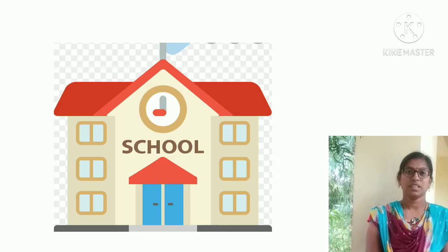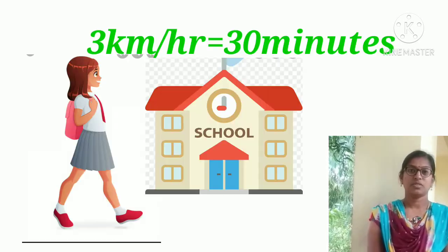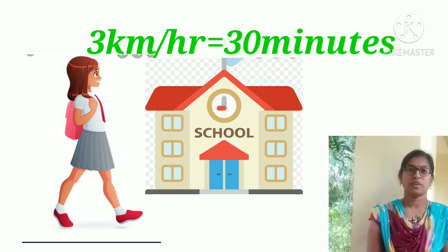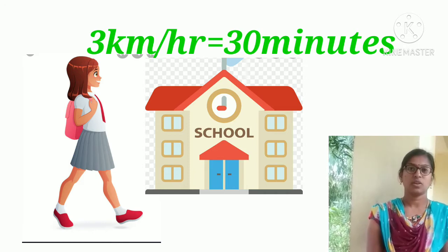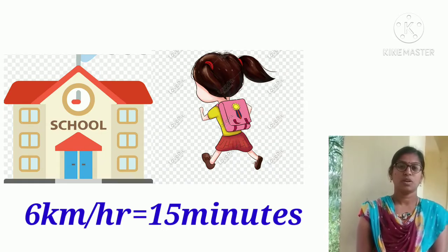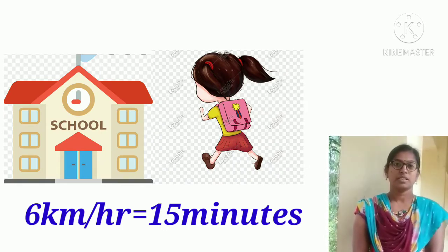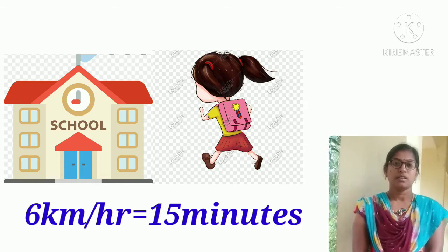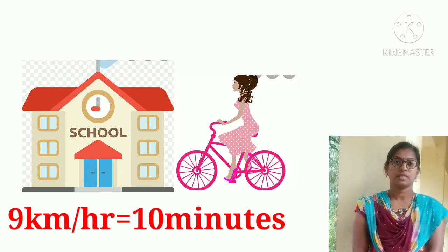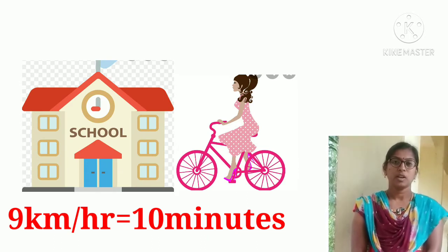Look at the situation here. We see a girl using different ways of going to school. If she walks at a speed of 3 km per hour, she reaches school in 30 minutes. If she goes by running at 6 km per hour, she reaches school in 15 minutes.